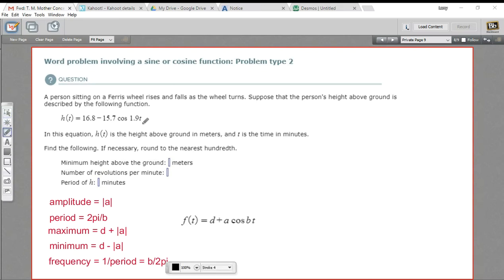Here we have a word problem that involves a trigonometric function. In this case, the cosine. We've got this function h(t) = 16.8 - 15.7 * cos(1.9t). So t is time here, time in minutes.